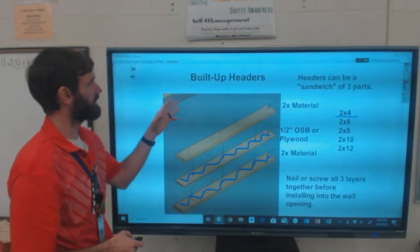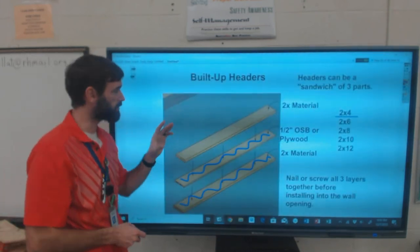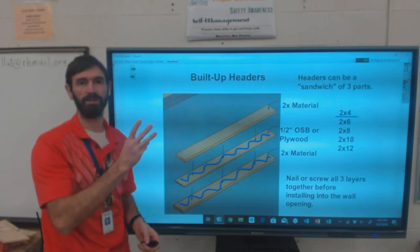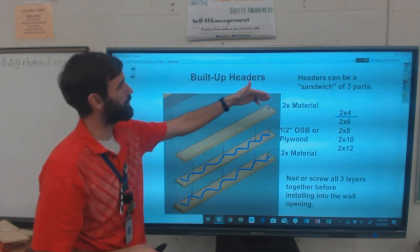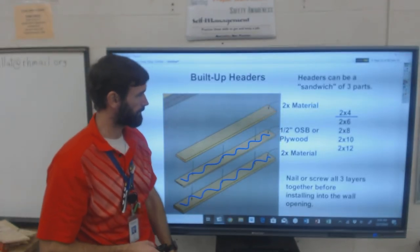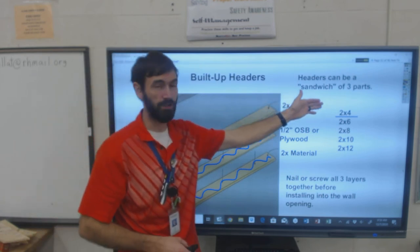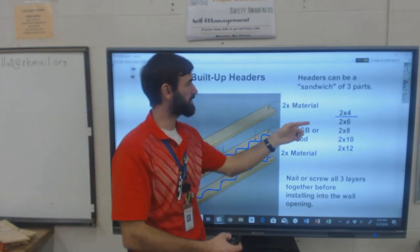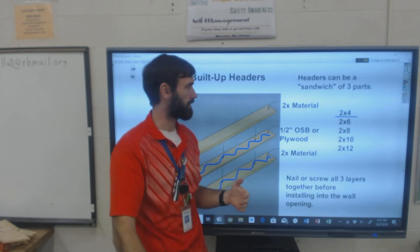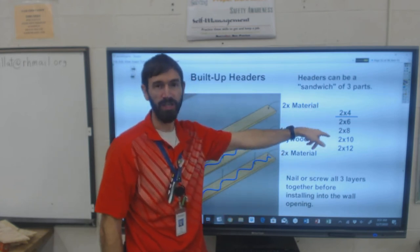Let's talk more about built-up headers. I mentioned this is what we're going to be doing primarily. A built-up header is made of three parts: two-by material, half-inch OSB or plywood, and two-by material. When I say two-by, that leaves the width of it open depending on what you need. Two-by-four, six, eight, ten, twelve.